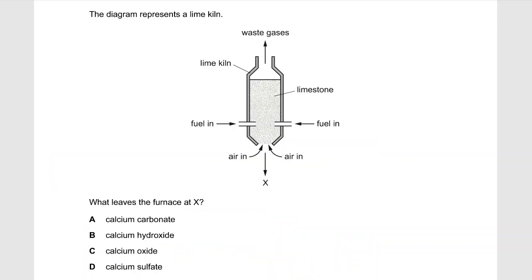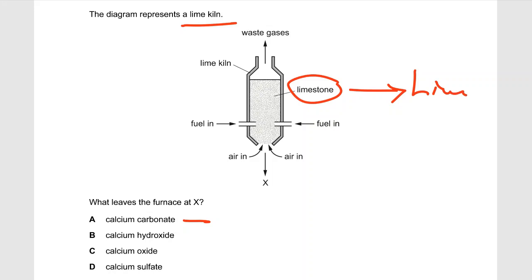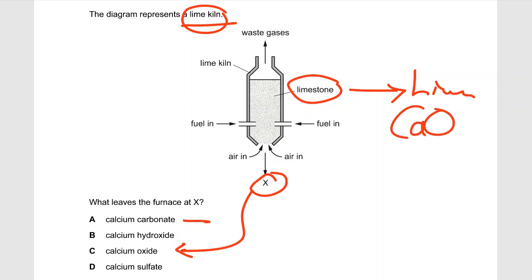The next diagram represents a limekiln. What forms at X? You are going to form lime. The temperature is very high, so limestone — which is calcium carbonate — decomposes into lime and carbon dioxide. From the diagram you are forming lime, so X should be calcium oxide, which is lime. The correct answer is C.